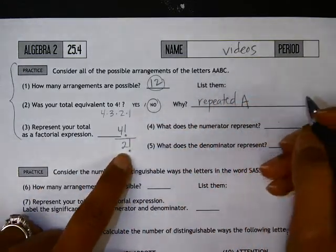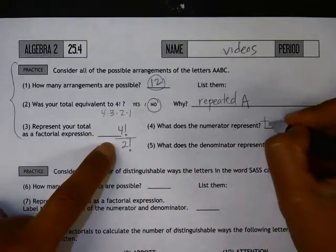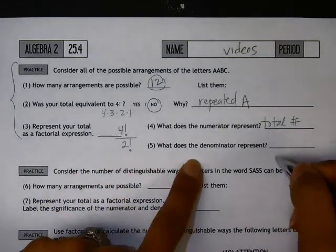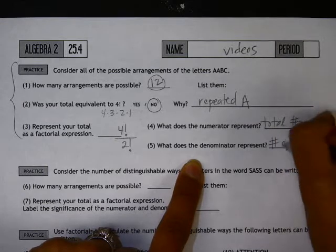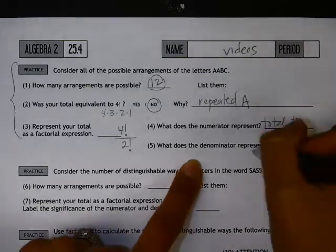So in this format here, the numerator represents total number of elements, and number five, what does the denominator represent? The number of times A is repeated.